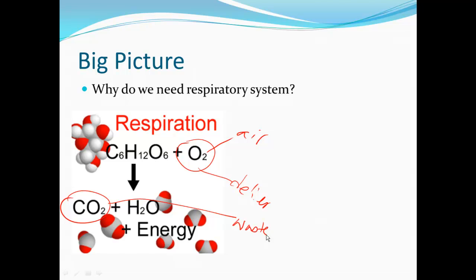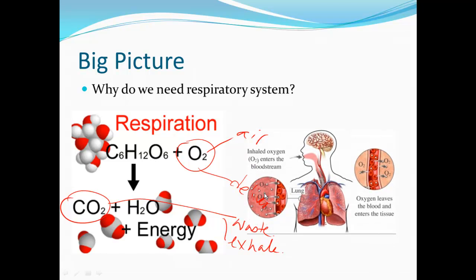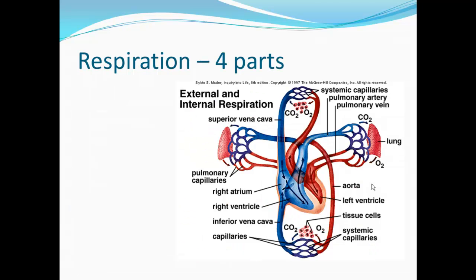The second part of respiration is getting rid of waste that is produced — putting it out in our exhaled air, just like you put your garbage out by the curb. So the respiratory system is designed to capture oxygen and deliver it through the bloodstream to the actual cells. Here we're seeing the delivery, the drop-off of the oxygen — that's parts one through four of respiration.